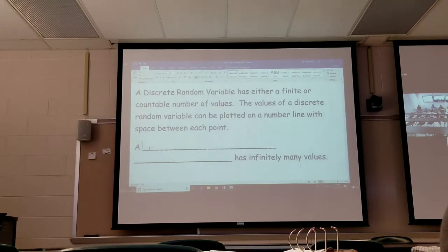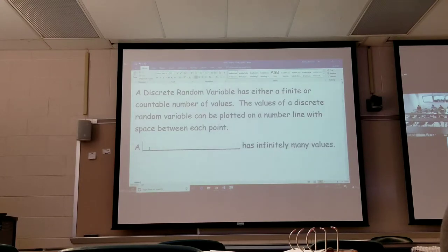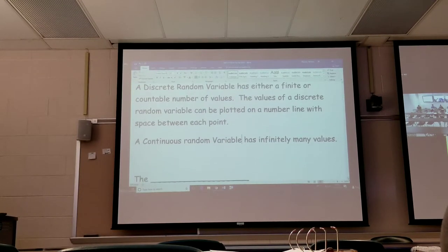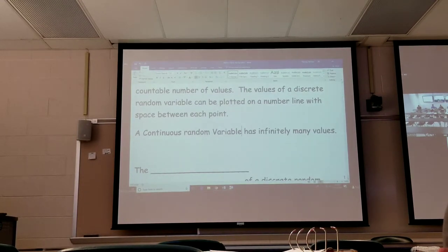A continuous random variable has infinitely many values. It's infinitely many values, just like discrete variable, but now we're adding the word random.